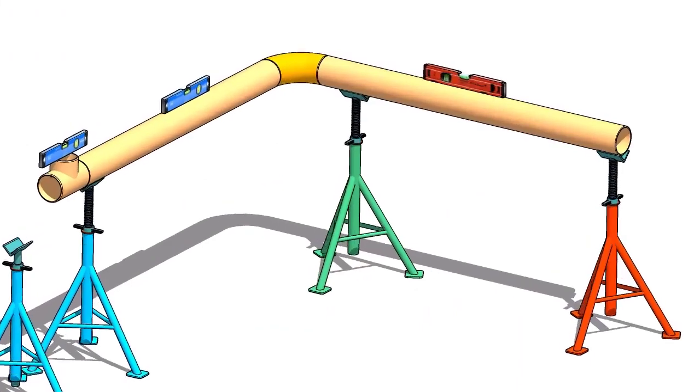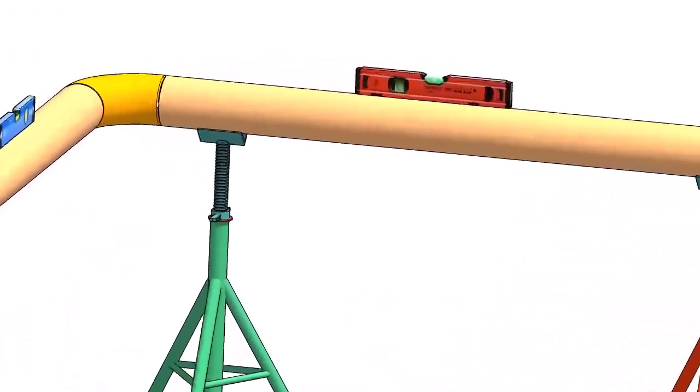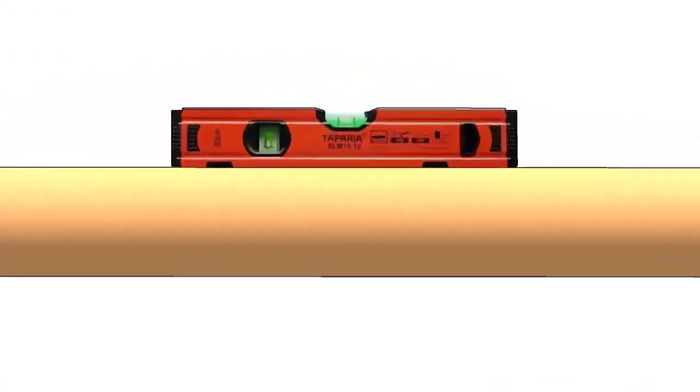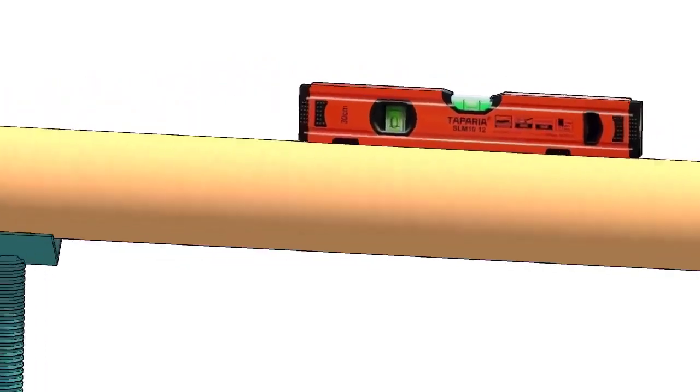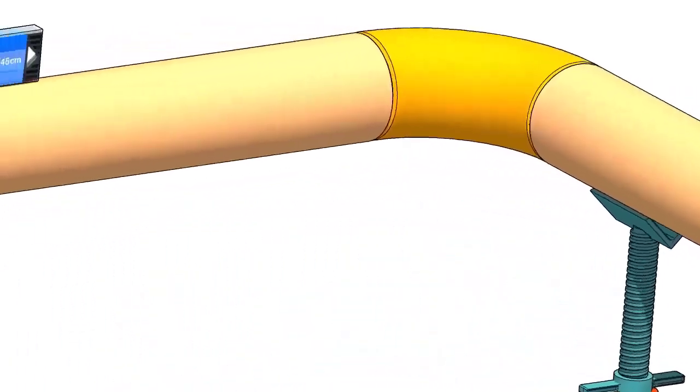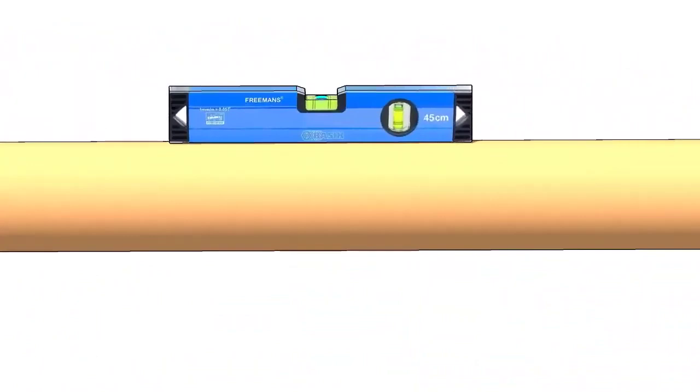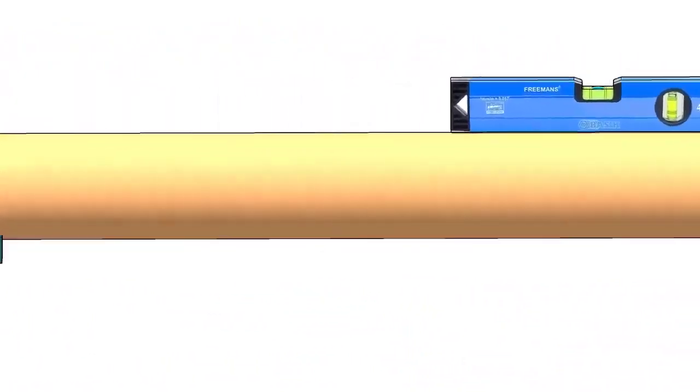First thing to do is to make sure the already fabricated spools dimension and level are acceptable. Mark the center lines of the tee and the elbow.